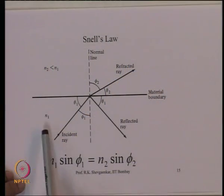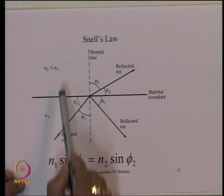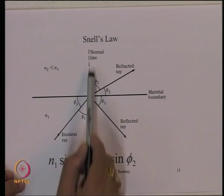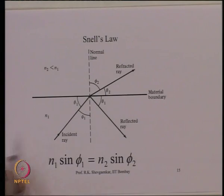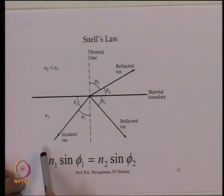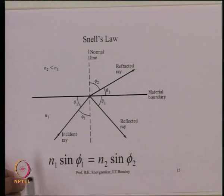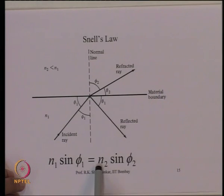In the ray model, light obeys Snell's law. If we have a medium n1 and a medium n2, and a ray is launched at angle φ1 with respect to the normal (the angle of incidence), the light is refracted into the second medium at angle φ2 with respect to the normal. Snell's law states: n1 sin φ1 = n2 sin φ2.